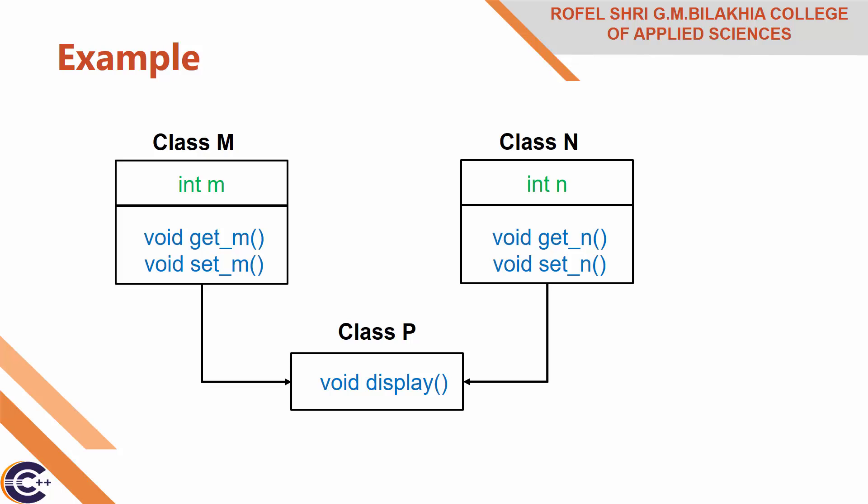In class N, there is one protected member integer N, with two public member functions: getN that accepts the value of variable N, and void setN that displays the value of variable N. Now from these two base classes, derive a child class — class P — and it displays the multiplication of variable M from class M and variable N from class N, in its public display member function. We have to do this program in Turbo C.